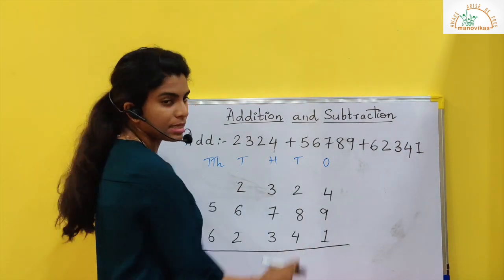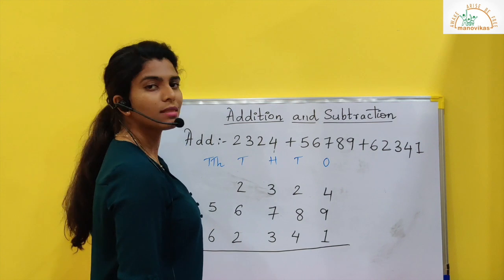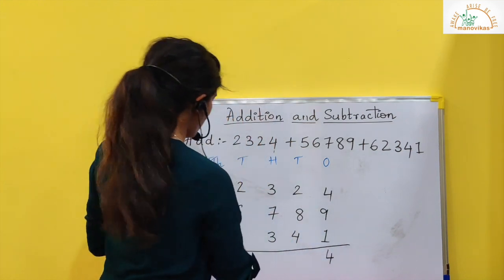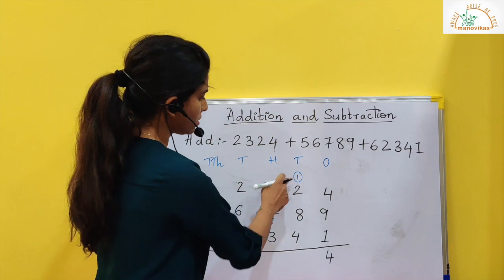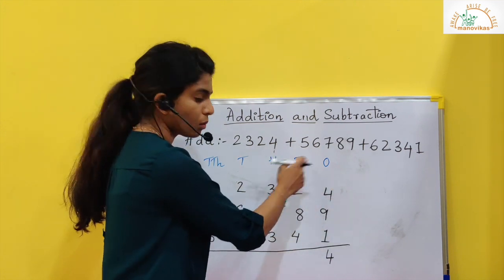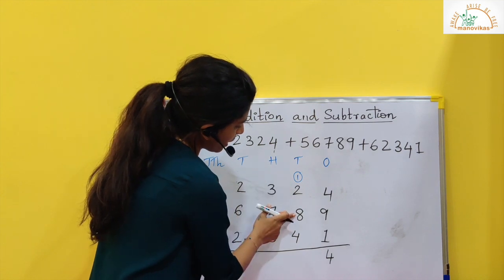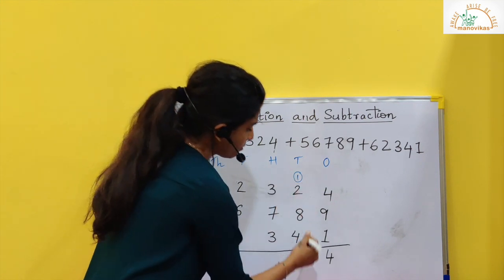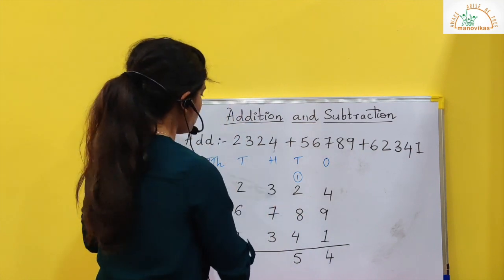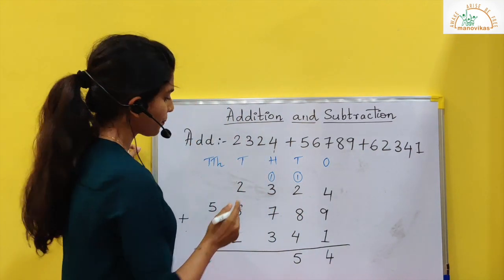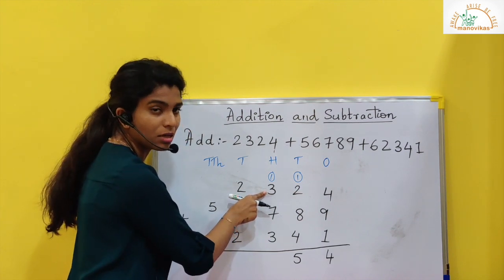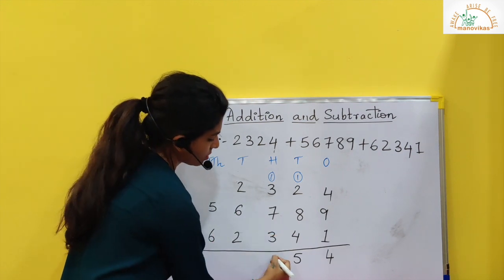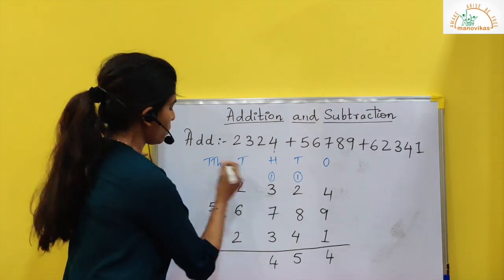Now, 4 plus 9 is how much? It is 13. 13 plus 1 is 14. So I write 4 here, 1 got carried over. 8 plus 4 gives me 12. 12 plus 2 is 14, plus 1 is 15. I write 5 here, 1 gets carried over.